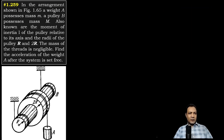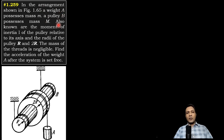Hello, let's look at this beautiful question from Irodov on rigid body dynamics. The question states: in the arrangement shown in the figure, weight A has mass m, pulley B has mass M, with moment of inertia I about its axis. The radii of the pulley are r and 2r, and the mass of the threads is negligible.